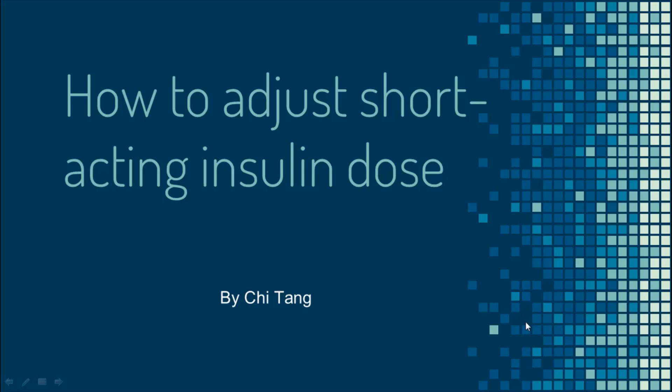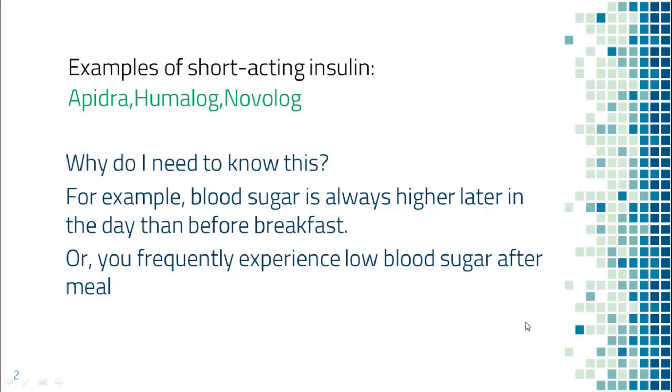In this video we'll talk about how to adjust short-acting insulin dose. People usually take short-acting insulin to cover meals or treat high blood sugar. It starts to work immediately and is able to lower blood sugar quickly. Some examples of short-acting insulin are Apidra, Humalog, and Novolog.